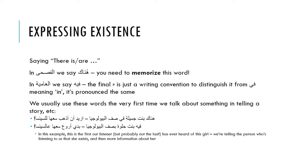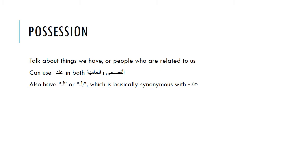We do something very similar with possession — talking about things we have or people who are related to us. In both فصحى and عامية we can use عَند. But there's also another set of words: we have ل in فصحى, so لي، لَك، etc. Or إل, so إلي، إلك, which is basically synonymous with عَند. There's a little bit of difference in how they're used, but you'll pick that up over time.